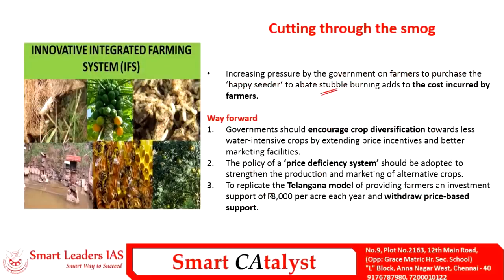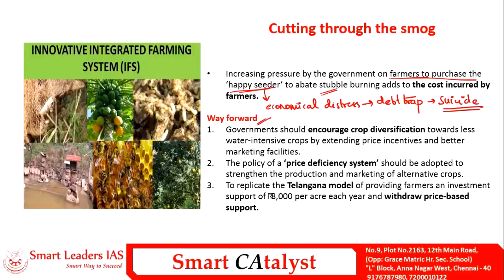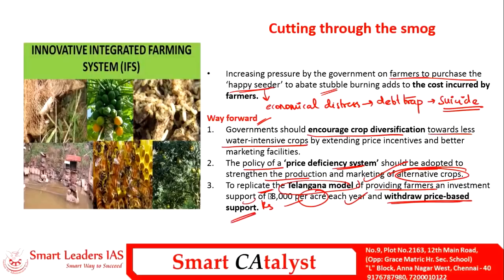The government's initiative to abate stubble burning forces farmers to purchase the happy seeder harvester, putting them under economic distress, leading to a debt trap, and ultimately costing lives through farmer suicides. The way forward is for the government to encourage crop diversification towards less water-intensive crops. A policy of price deficiency system should be adopted to strengthen production and marketing of alternative crops outside MSP coverage. It is also good to replicate the Telangana model of providing farmers investment support of rupees 8,000 per acre per year and withdrawing price-based support through MSP.